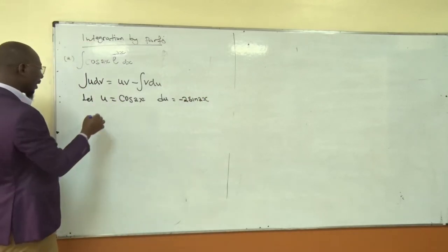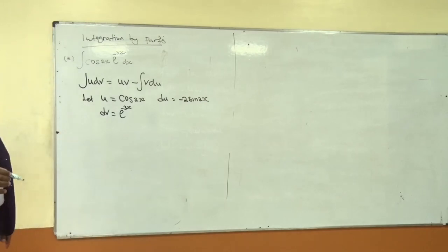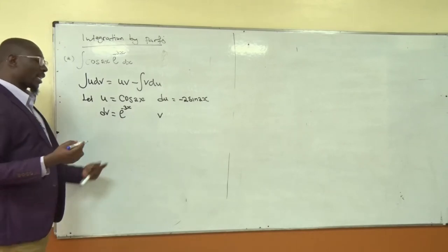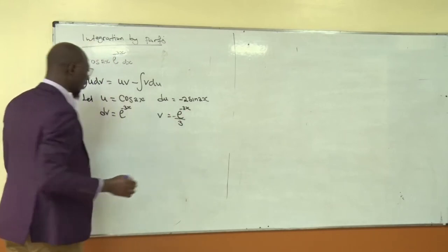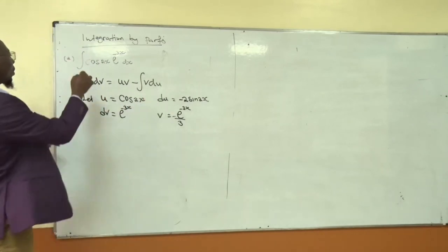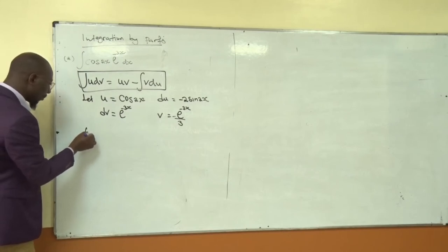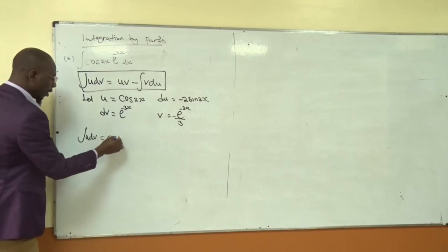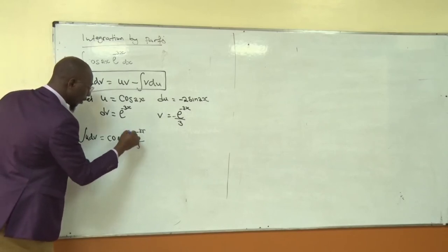We also let dv = e^(−3x) dx. To get v, we integrate: integrating an exponential, the coefficient remains the same but we divide by the coefficient in the exponent, so v = e^(−3x) / (−3). Now we have u, du, v, and dv, and we can substitute into the formula. The integral equals u·v = cos(2x) · e^(−3x)/(−3).